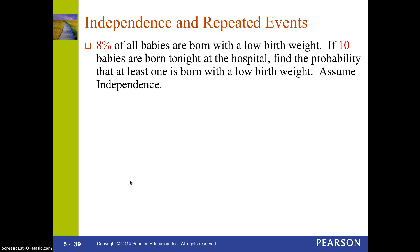Now let's look at independence with repeated events. 8% of all babies are born with a low birth rate. If 10 babies are born tonight at the hospital, we want to find the probability that at least one is born with a low birth rate. We'll assume independence — the weight of one baby is not dependent on the weight of any other baby.